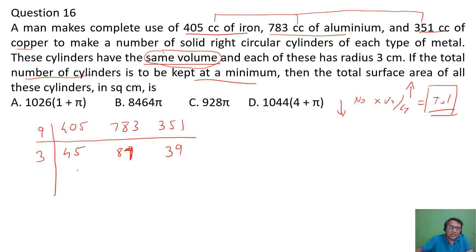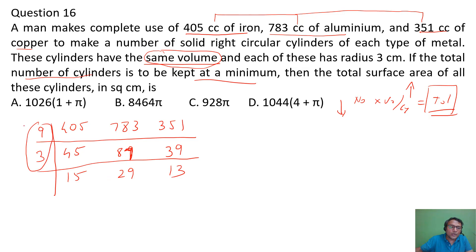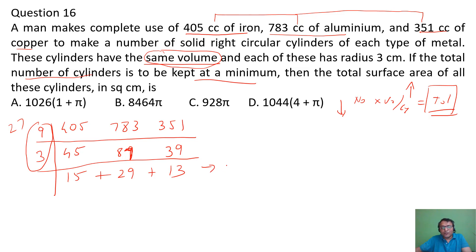You can factor out 3 further: 405=9×45=9×9×5, 780=9×..., giving 15, 29, and 13 respectively. The common HCF works out to 9×3=27. So the volume of each cylinder is 27 cc, and the total number of cylinders is 15+29+13 = 57.